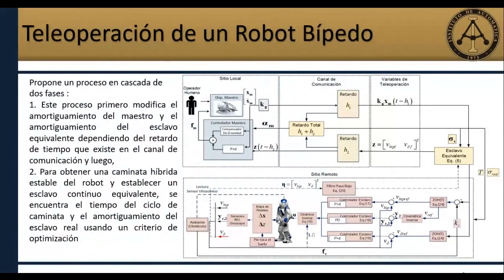En cuanto al esclavo equivalente: si nos vamos a cómo se modela un robot humanoide, es a partir de una dinámica continua y una dinámica discreta. La continua es cuando el pie levanta y la discreta es cuando se impacta. Para acotar todo este comportamiento híbrido, se propone un esclavo equivalente, permitiendo utilizar las leyes de teleoperación continuas.